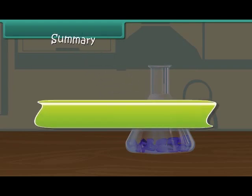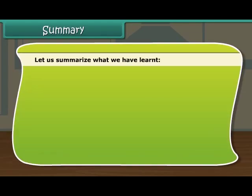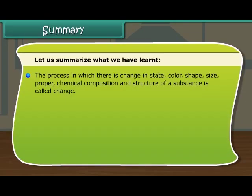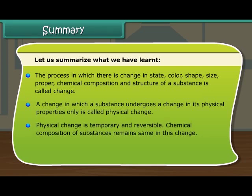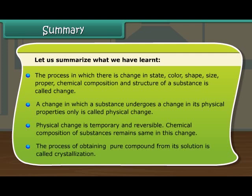Summary. The process in which there is a change in state, color, shape, size, chemical composition, and structure of a substance is called change. A change in which a substance undergoes a change in its physical properties only is called physical change. Physical change is temporary and reversible. The chemical composition of substances remains the same in this change. The process of obtaining a pure compound from its solution is called crystallization.